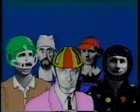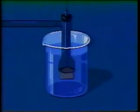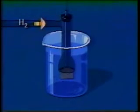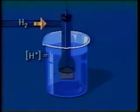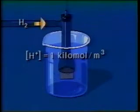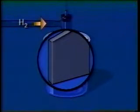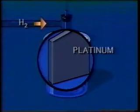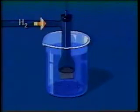Chemists use a similar procedure. As an electrochemical standard, they have selected a hydrogen half-cell. Hydrogen gas at a pressure of one atmosphere is introduced into a tube, which is immersed in a standard concentration of hydrogen ions — one kilomole per cubic meter. The electrode is made of platinum because it is chemically inert and doesn't interfere with the reaction.